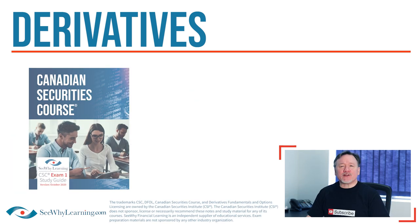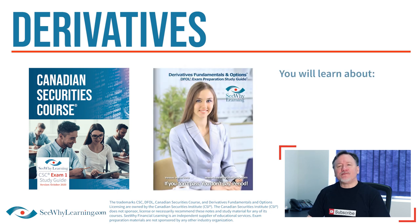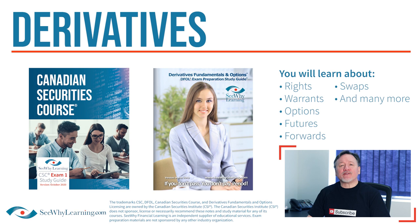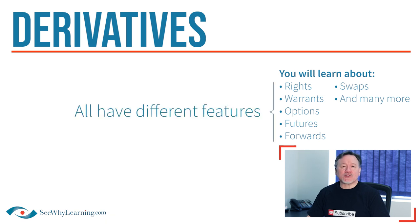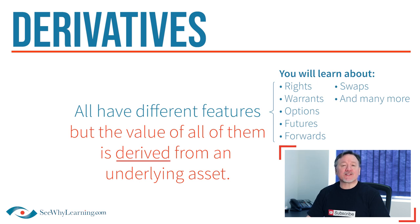If you're taking the Canadian Securities course, or obviously a derivatives course, you're going to learn about the various types of derivative contracts, such as rights, warrants, options contracts, futures that trade on an exchange, forwards that trade over the counter, swaps, and many other products. These derivative contracts all have different features, but they all follow the same basic principle: the value of the contract is based upon, or derived from, the value of the underlying asset — and this is why it's called a derivative investment.